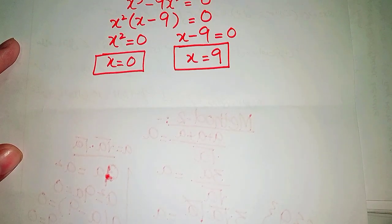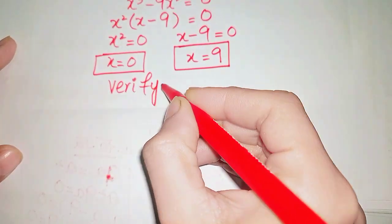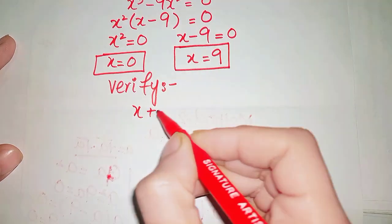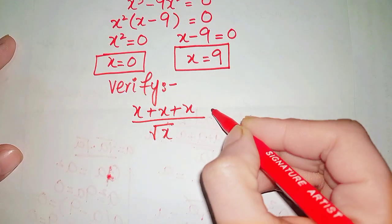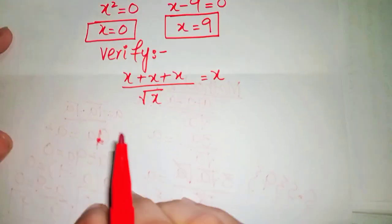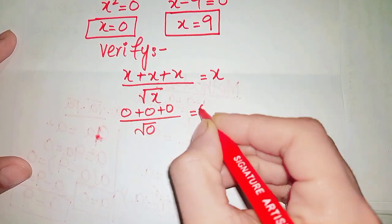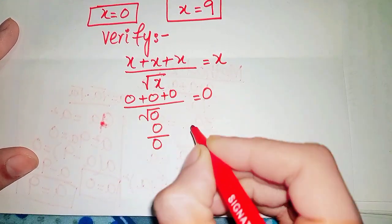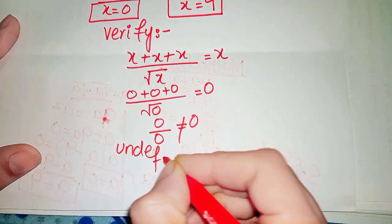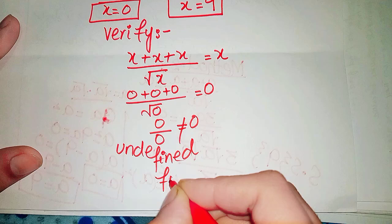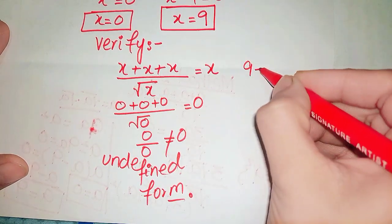Now we put both values into the original equation to verify them. The original equation is x plus x plus x over square root of x equals x. When we put 0 in, we get an undefined form, so x equals 0 is not a solution.